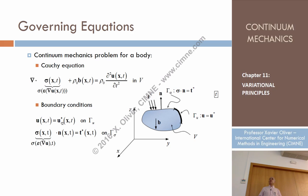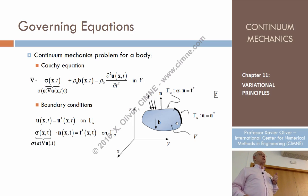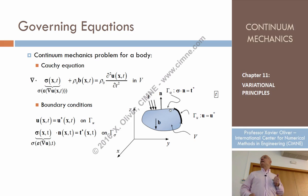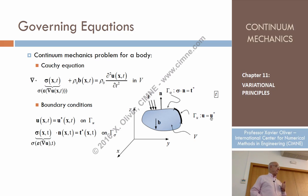The boundary conditions are U equal U-star at gamma-U. In the nomenclature we have used, those would be the essential boundary conditions — the unknown that we are dealing with is prescribed at this boundary.